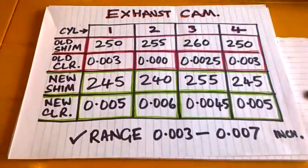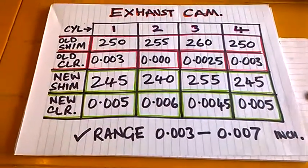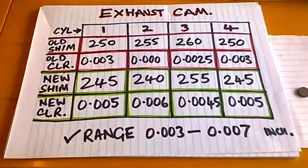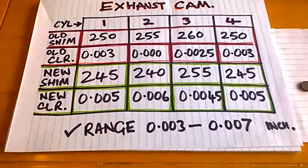So anyway, I hope that helps anybody else trying to figure out the clearances on these bucket over shims because it can be a bit of a sort of thing to get your head around. Or at least I found it that way. But I hope that helps.